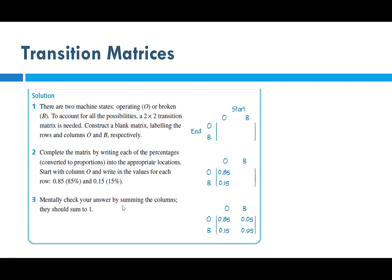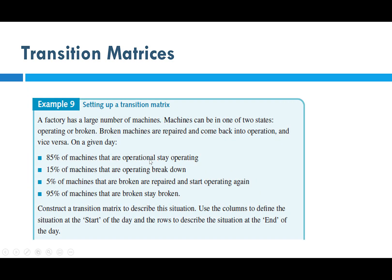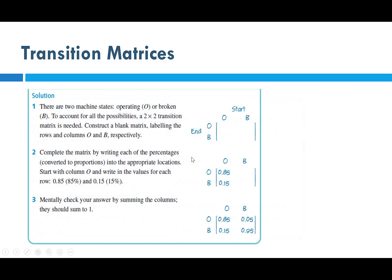We set up the diagram with Operating and Broken as states. 85% of operational machines stay operational — so O-to-O is 0.85. Broken machines returning to operating is 0.05. Then operating-to-broken is 0.15, and broken-to-broken is 0.95. These all add up to 1.0 in each column, so they're easy to verify.